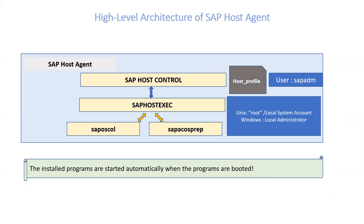SAP Host Control Service runs under the SAP ADM user and monitors hosts. They play a similar role like the previously existing CCMS agent, SAP CCMSR. SAP OS Call is a standalone program running in the background that collects data about operating system resources such as memory usage, CPU utilization, disks, and file system utilization.